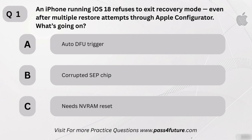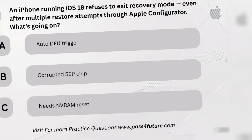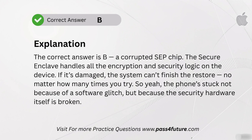Here's the first one. An iPhone running iOS 18 refuses to exit recovery mode, even after multiple restore attempts through Apple Configurator. What's likely causing this? A. Auto DFU trigger. B. Corrupted SEP chip needs NVRAM reset. The correct answer is B — a corrupted SEP chip. The Secure Enclave handles all the encryption and security logic on the device. If it's damaged, the system can't finish the restore no matter how many times you try. The phone's stuck not because of a software glitch, but because the security hardware itself is broken.